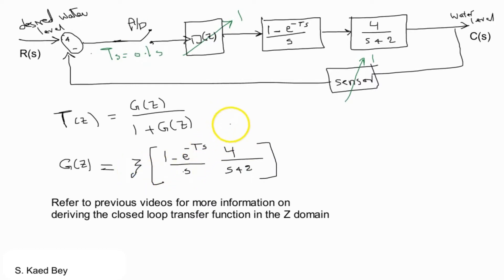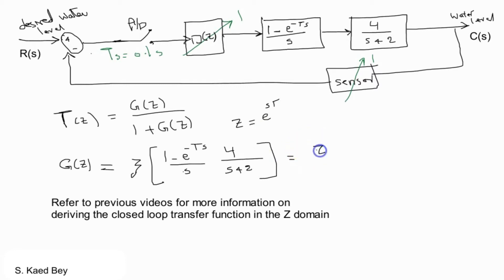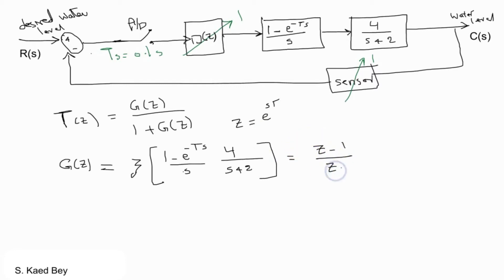G(Z) is defined as the Z-transform of the zero-order hold multiplied by the plant transfer function. If we replace e to the power of negative ST, we will end up with a sampling time of 0.1 seconds for that term, and multiply the denominator S with the plant transfer function.